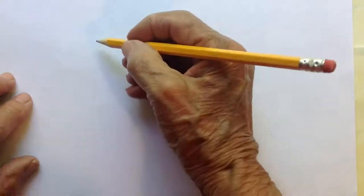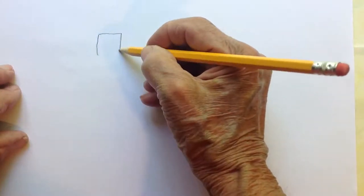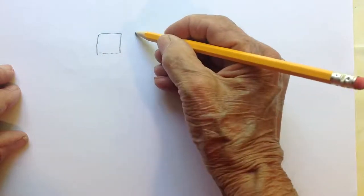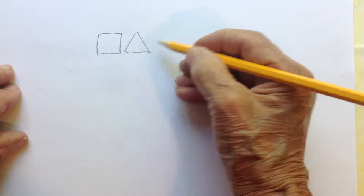In nature there are three basic shapes. There is a square, there is a triangle, and there is a circle.